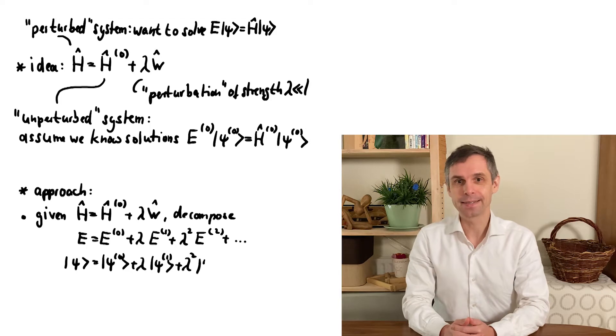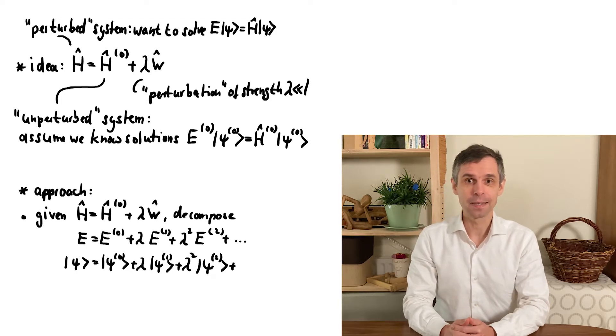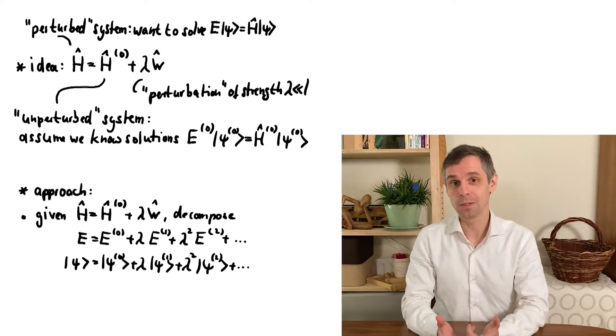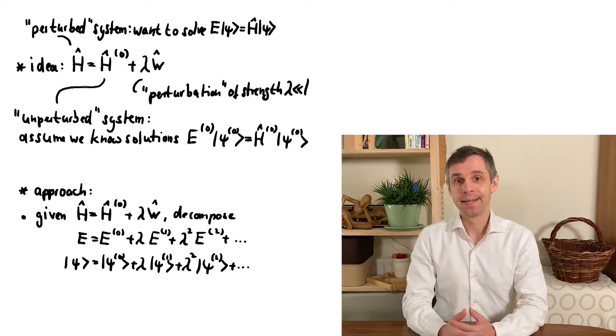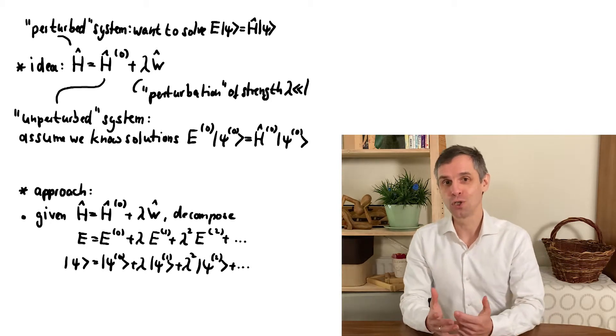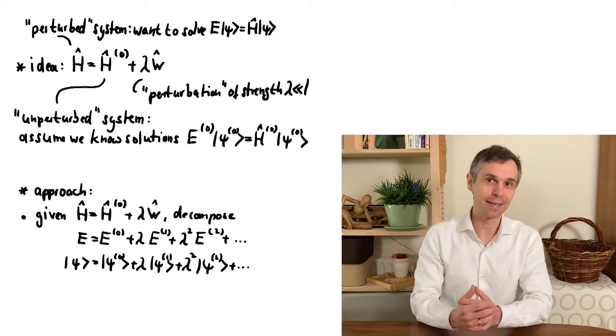So we start with these expressions for the new energy and the new eigenstate. They are just the same as the ones that I wrote down along with the main result before we looked at how this all works in practice in our first example. The main result was just a simple explicit expression for the term E1 in the series for the energy.